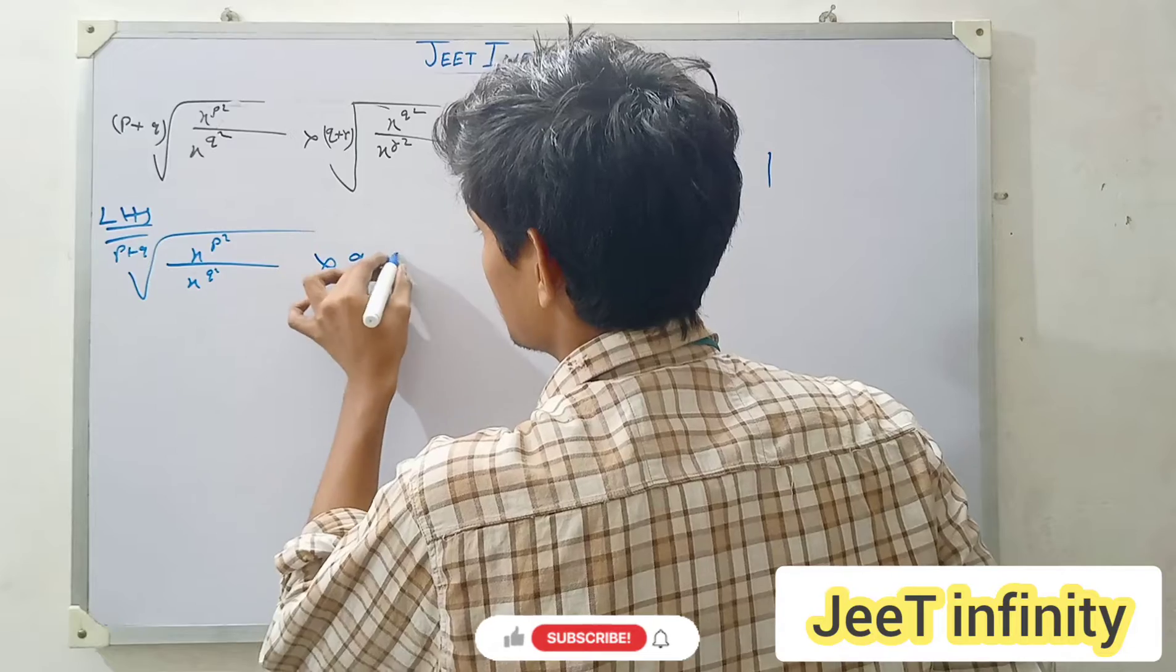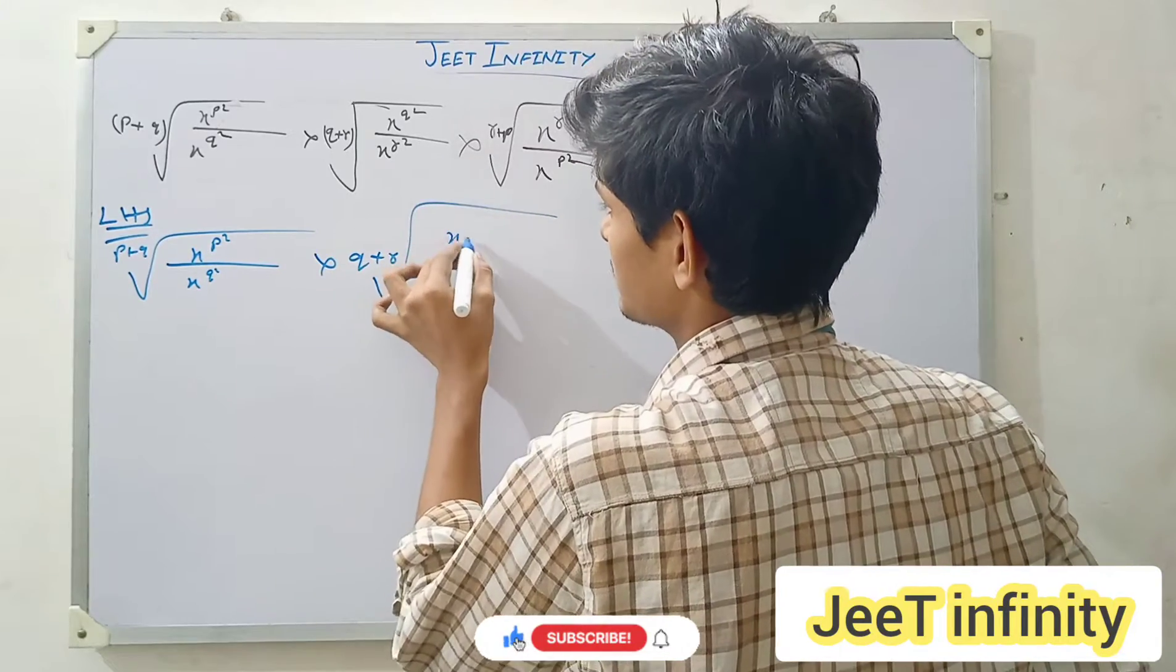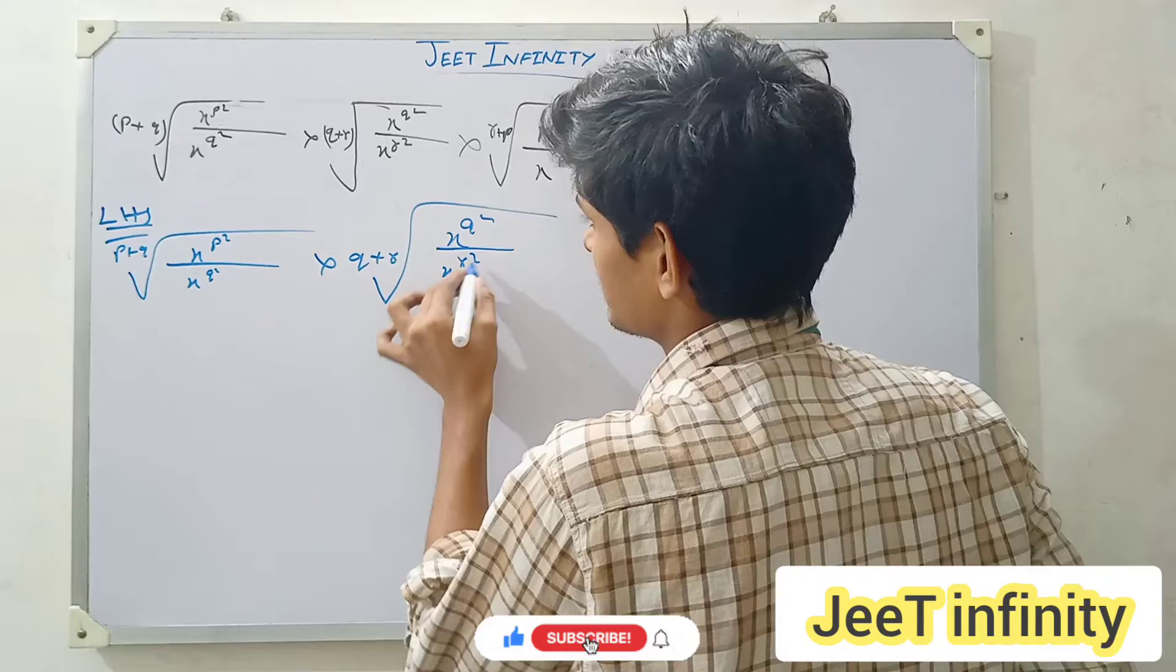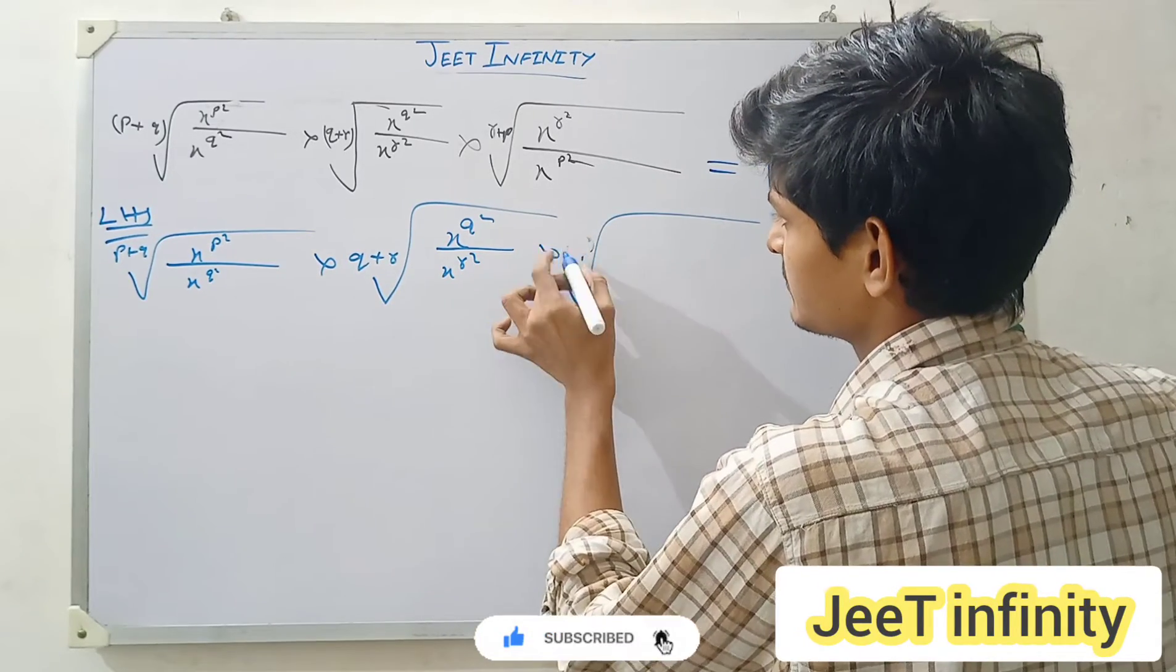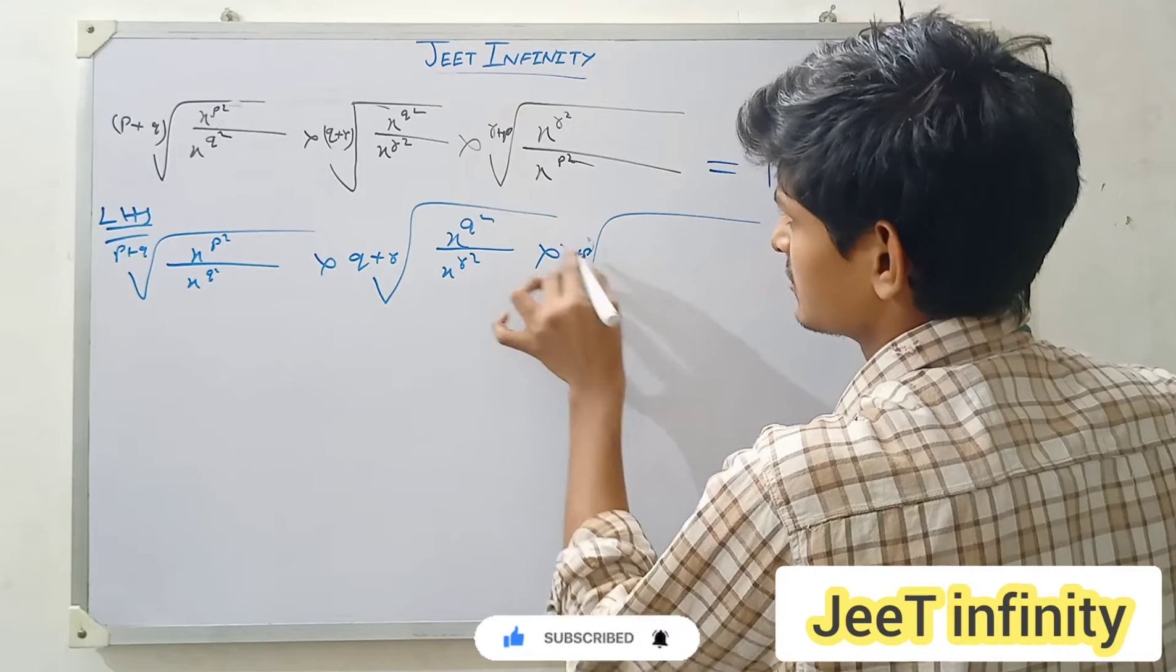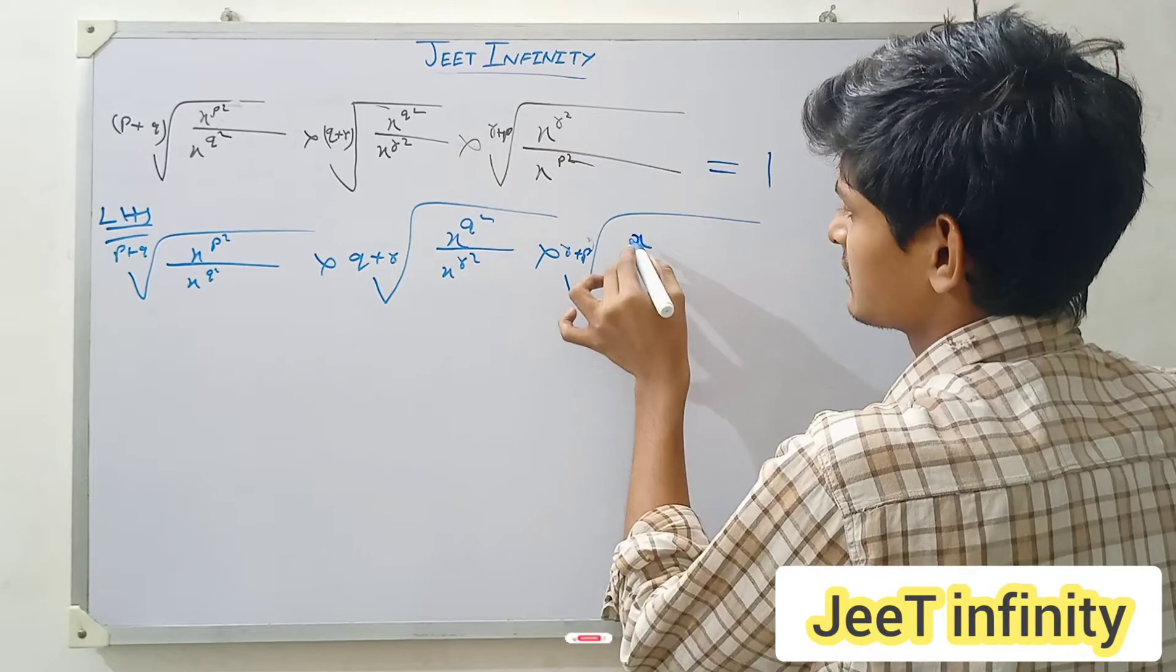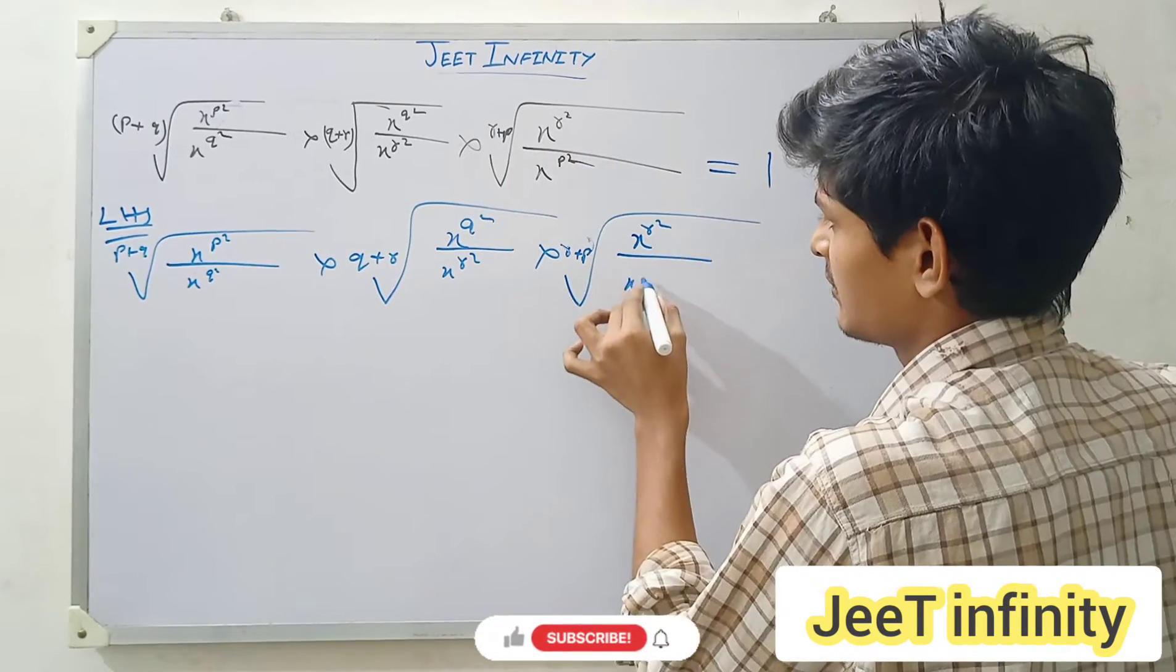Multiplied by (q plus r) root, x to the power q over x to the power r. And again multiplied by (r plus p) root.